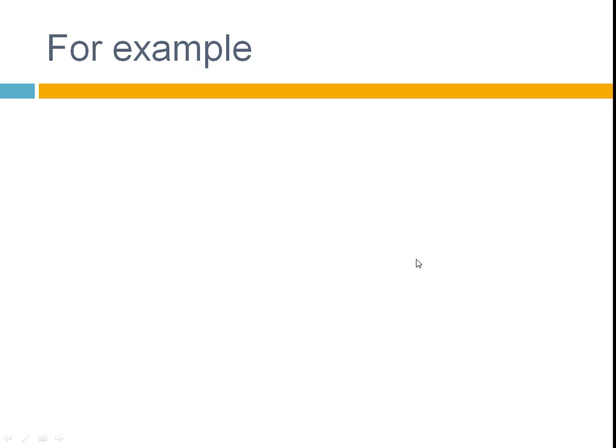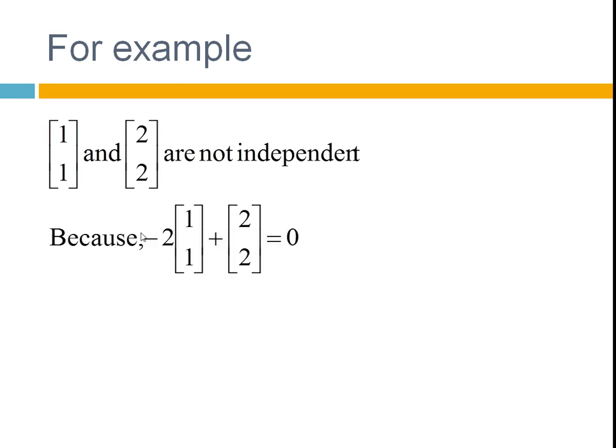So let's look at some examples. If you take these two vectors, 1, 1, and 2, 2, these are not independent. The reason being is that you can come up with some combination that sums to 0. You multiply this vector by minus 2, you multiply this vector by 1, you've got the 0 vector. If these vectors were independent, you would not be able to find a combination that equals 0. So you would refer to these two vectors as being dependent.